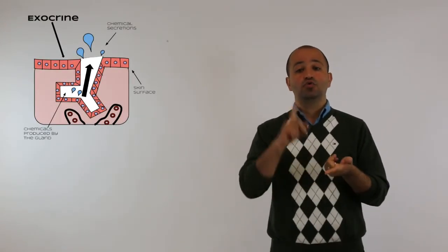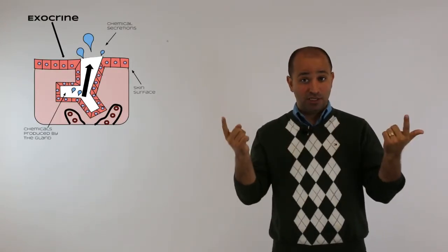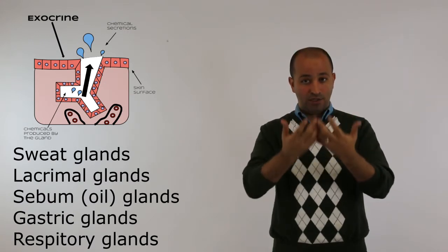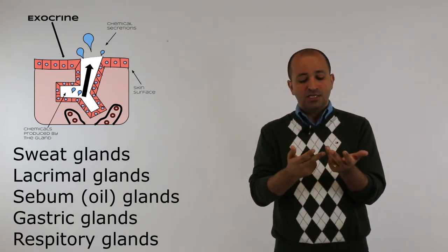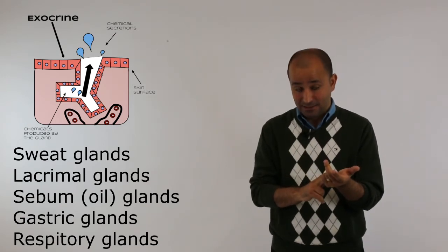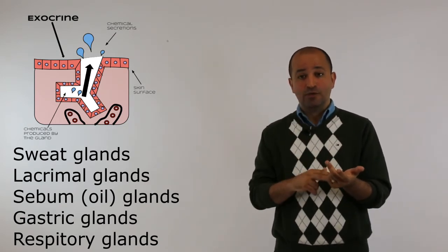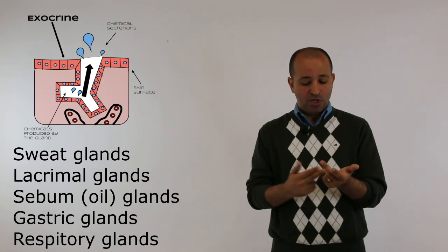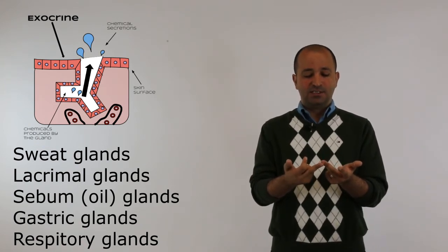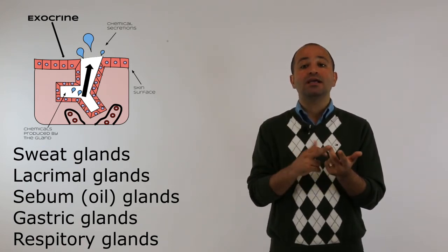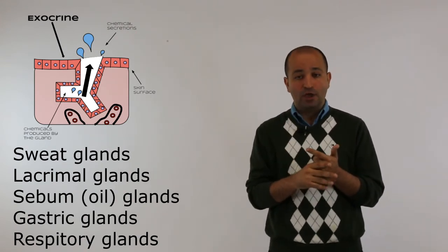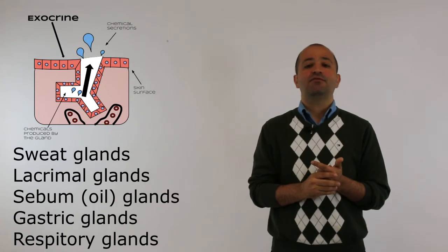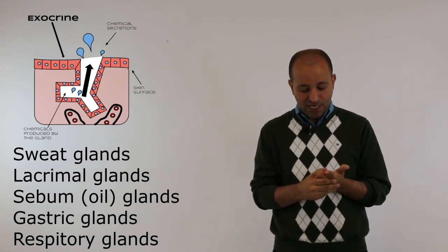Exocrine glands send their secretions outside the body or to other organs. Examples include sweat glands, lacrimal glands which produce tears, and sebum or oil glands in the skin that produce oil, mostly in hair follicles.